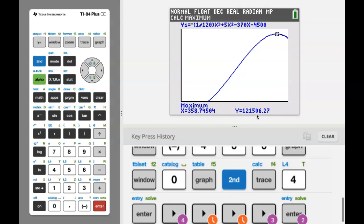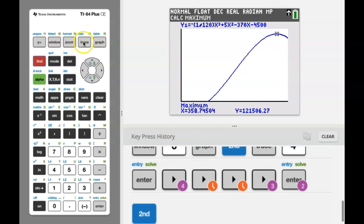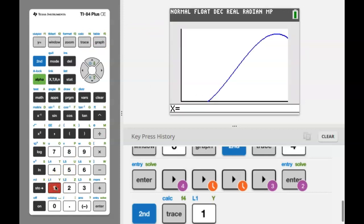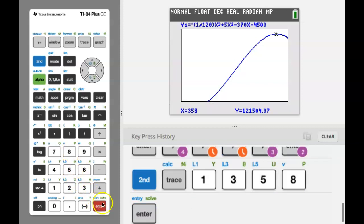So the last thing I want to show you on your calculator is how to get a Y value for a specific X value. And there are a number of ways of doing this. I'm going to show you, though, how to do it off of the graph. So we're going to go back to that Calc menu. So 2nd, Calc, but this time we're going to choose number 1 that says Value. And you'll notice this lets you enter in any X value that you want. So let's put in 358 boats, press Enter, and that will tell us that the profit will be $121,504.07.